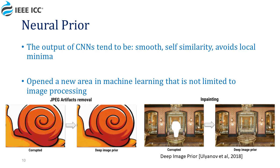It can be shown that the output of convolutional networks tends to be smooth with self-similarity due to the fact that the network kernels do not depend on the location on the image. It also tends to avoid local minima points in the loss function due to overparameterization in the network.